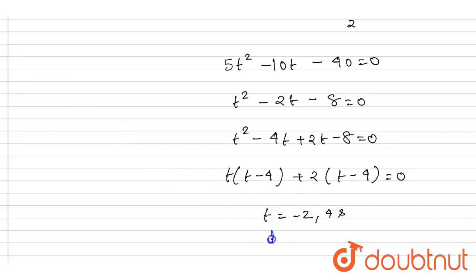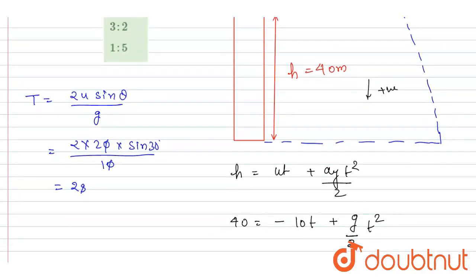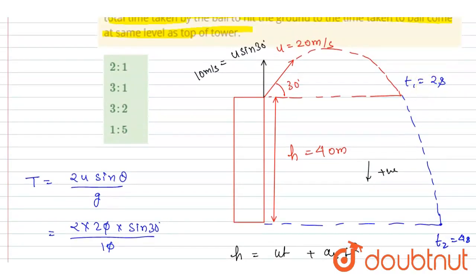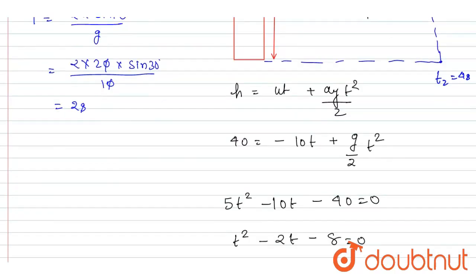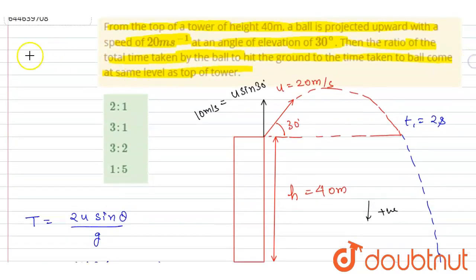So I'll ignore the negative value and I will write the time t₂ when it will strike the ground, it is 4 seconds. So let's say this is the time t₂ and it is 4 seconds, and this is the time t₁. And we wanted the ratio, so I will write the ratio t₂ by t₁, it will be equal to 4 by 2, that is 2:1, and this will be the answer of this question. Now you can check for the option, this is the correct answer.